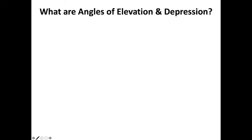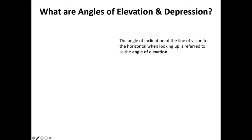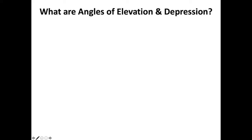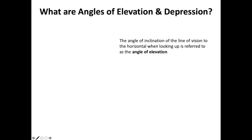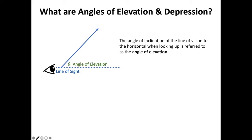We'll start off by looking at what angles of elevation and depression are. The angle of elevation is the angle of inclination of the line of vision to a horizontal point when you're looking up. We start with our line of sight at the bottom, and for angle of elevation, we are looking up to a point that is higher than our line of sight. The angle that is formed is the angle of elevation.